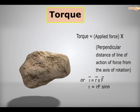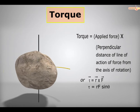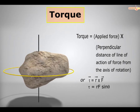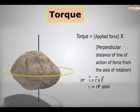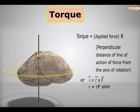A force acting on a rigid body produces a turning effect, which is measured in terms of torque. The turning effect of a force depends on the distance of the point of action of the force from the axis of rotation.